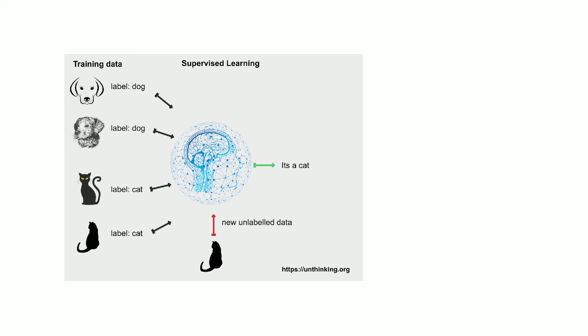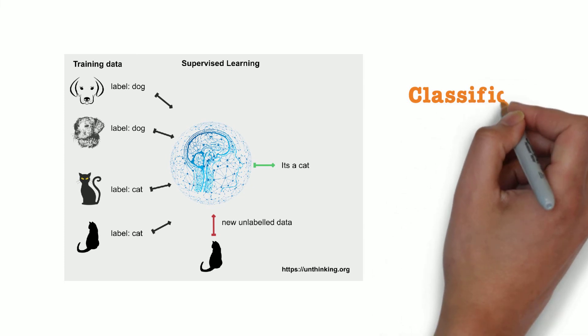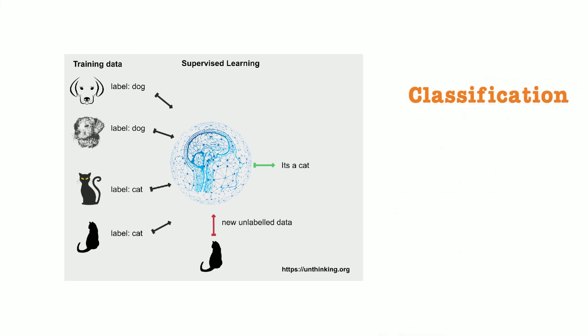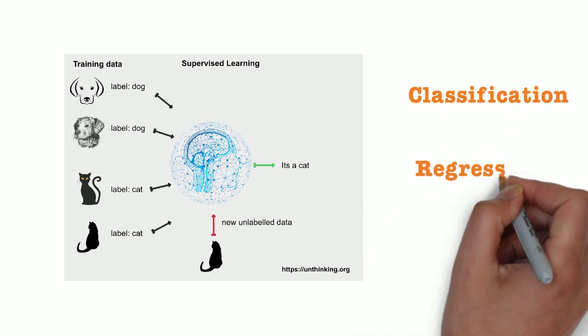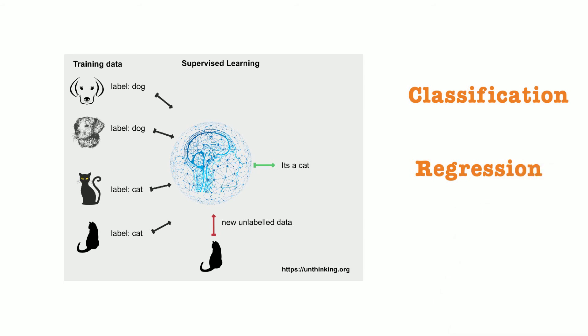There are two subcategories to supervised learning: classification and regression. Classification is like the email example which we discussed where the goal is to classify this or that. Regression is where the goal is to arrive at a specific number, for example, what would be tomorrow's stock price.